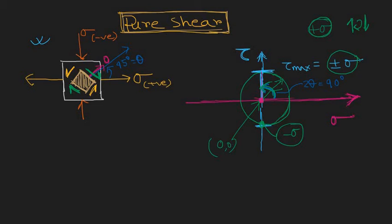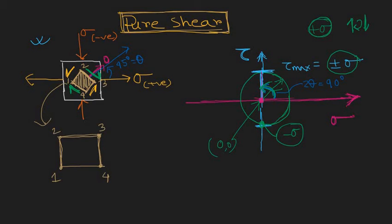Let's take out this element and consider it vertically. We name the corners: this is one, this is two, this is three, and this is four. From corner one to two the shear stress is acting downward — shown in yellow — anticlockwise. From two to three it is clockwise, shown in green. Let's fix this element at the base (corners one and four) and apply the shear stress.